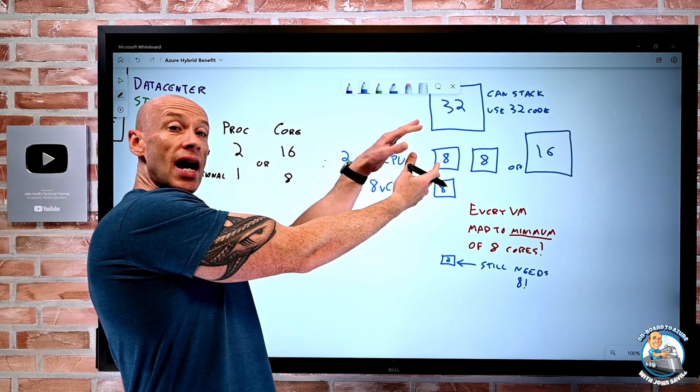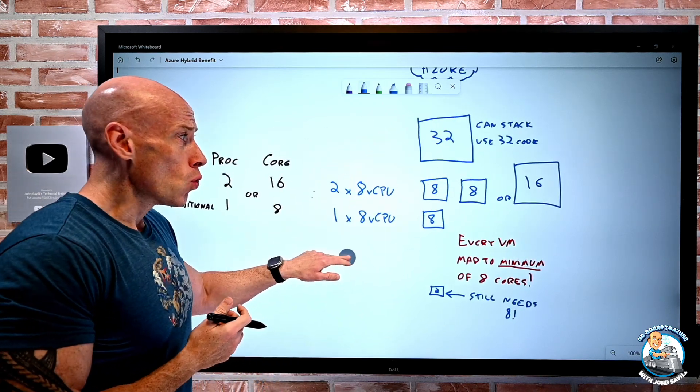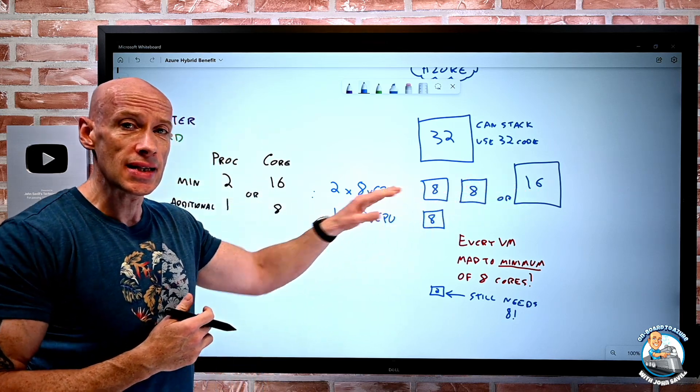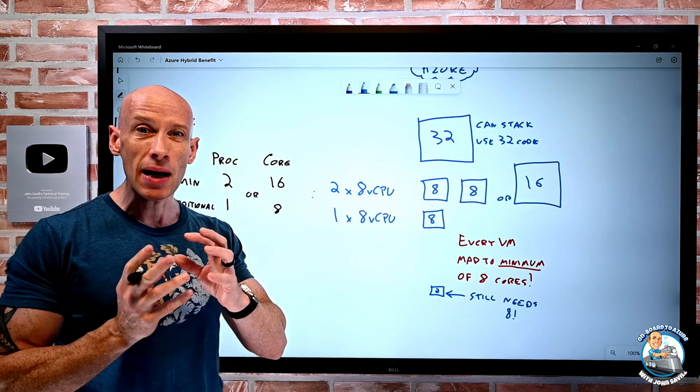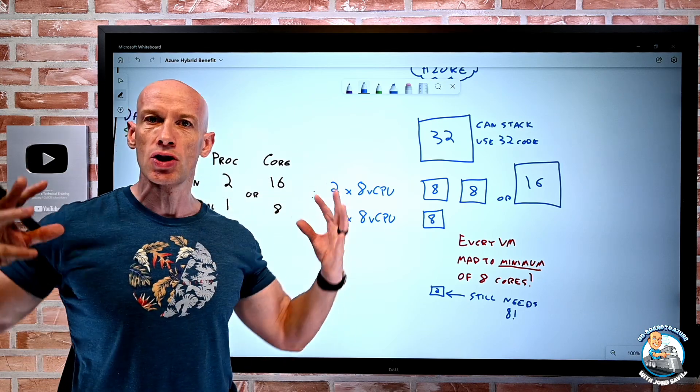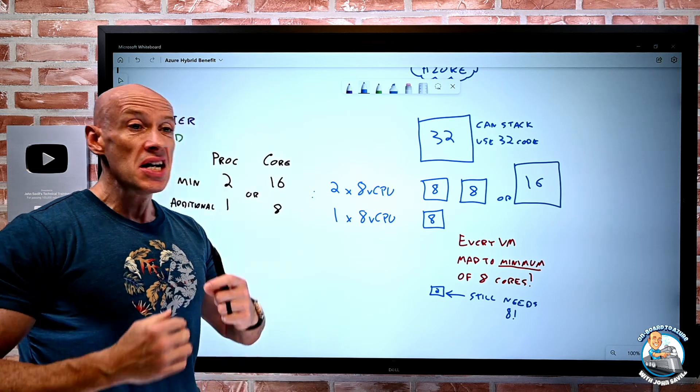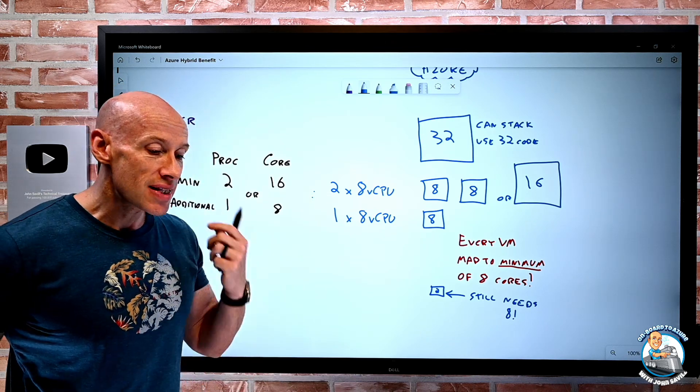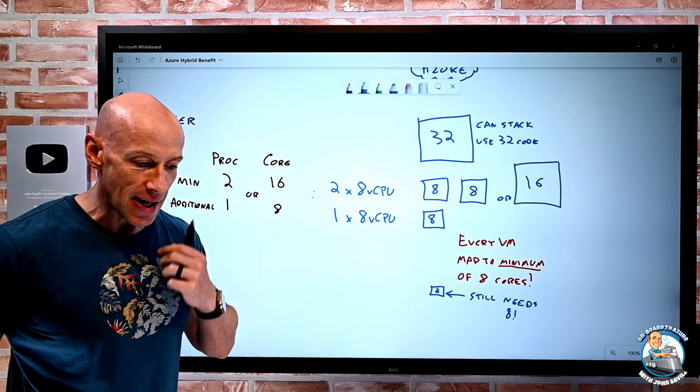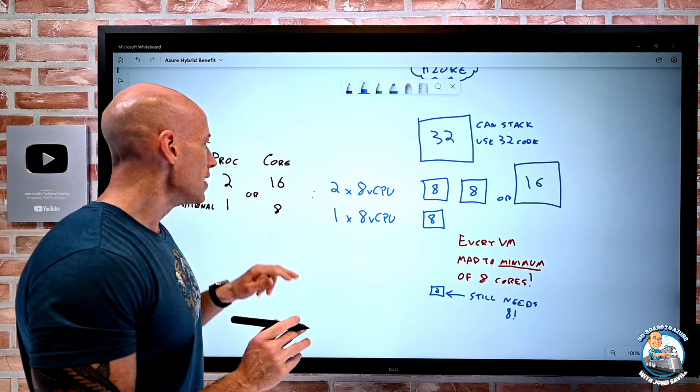And when I apply this Azure Hybrid Benefit, what it means for these virtual machines is I pay the base compute price, the same as if it was Linux. I don't pay for the Windows server guest OS additional price on that consumption anymore. I just pay the base compute price. So I'm saving that license money there. That's the key point of that.